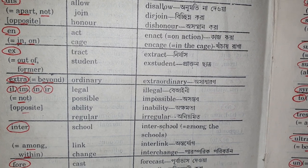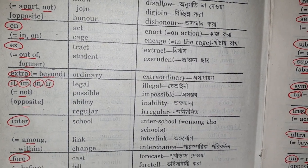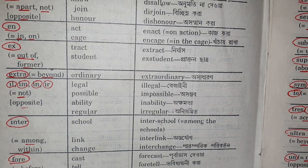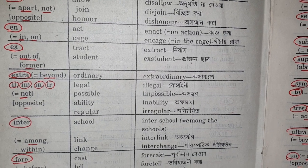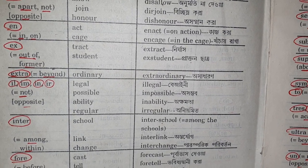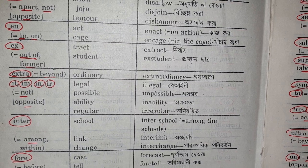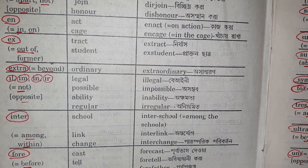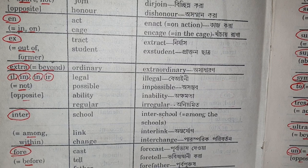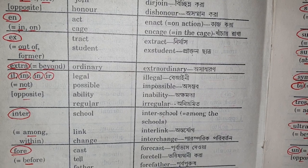Ex with meaning of out of or former — tract, extract; student, ex-student. Extra with the meaning of beyond — ordinary, extraordinary. Il, im, in or ir with the meaning of not, which will give the opposite sense — legal, illegal; possible, impossible. Inter with the meaning of among or within — school, inter-school; link, interlink.